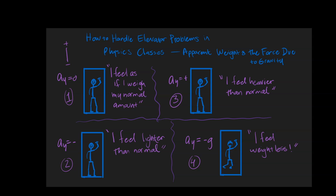Hey, welcome back. Today we're going to be talking through how to handle elevator problems in physics classes. This is appropriate for physics, AP physics, or even physical science classes. Specifically, we're going to be talking about apparent weight, the force due to gravity, and the normal force. You've probably had this experience where you go into an elevator at the bottom of a building and want to go up to, say, the third floor. At the beginning, before the elevator even moves, you have zero acceleration and feel as if you weigh your normal amount. Once the elevator starts to accelerate upwards, you feel like you weigh more than you normally do.